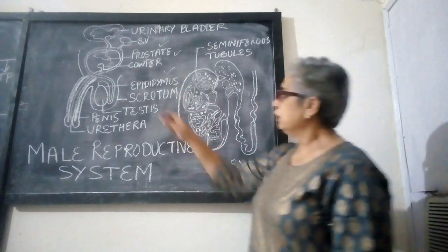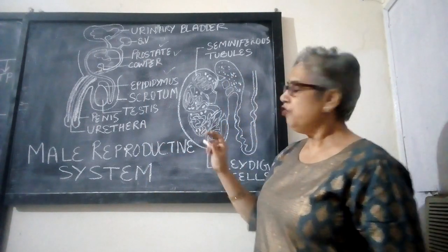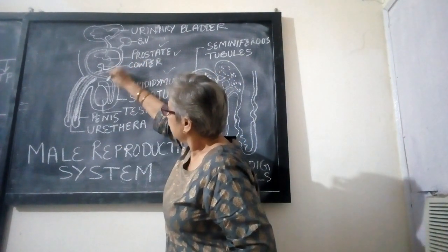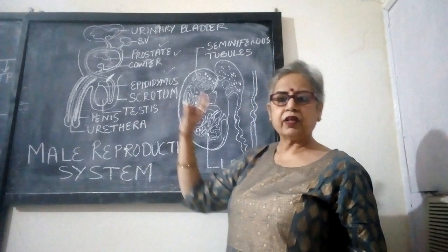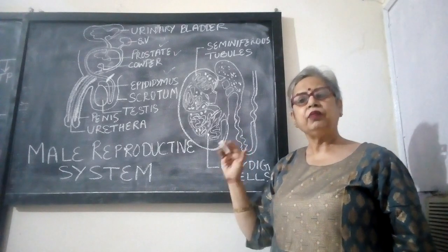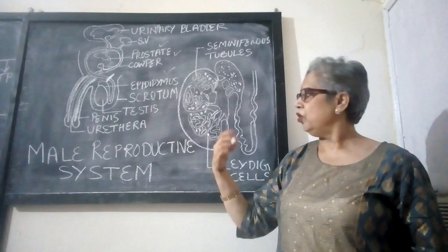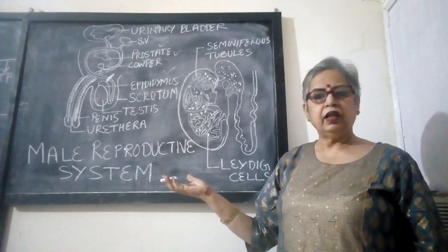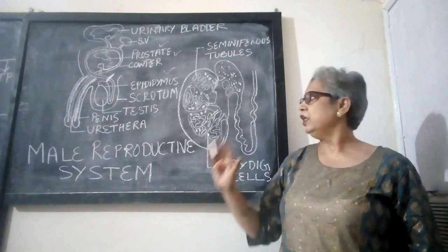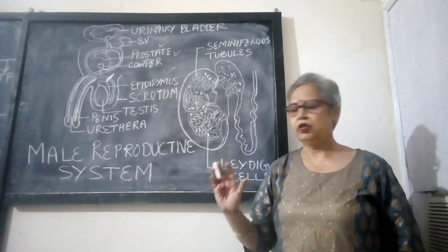These tubes are responsible for carrying the sperms, and during vasectomy what happens is that these tubes are cut, ligated, and tied, so the sperms cannot enter into the semen. So the semen is now without sperm. There are some myths in the mind of males that it leads to loss of virility, but there is no such effect on the person. It helps in family planning and in avoiding pregnancy due to sexual intercourse.